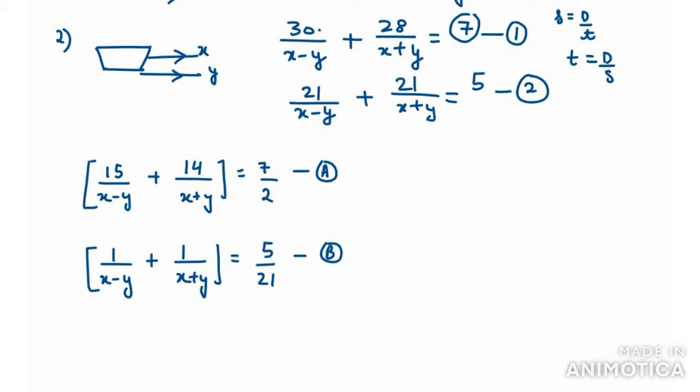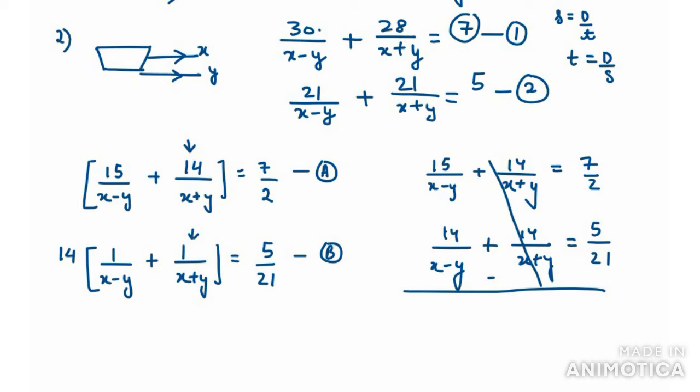Both equations have x minus y and x plus y terms, so we can use the elimination method. Equation A has 14 in the x plus y term. I'll try to get 14 in equation B as well by multiplying equation B by 14. Equation A stays as is: 15 over x minus y plus 14 over x plus y equals 7 over 2. Second equation becomes: 14 over x minus y plus 14 over x plus y.